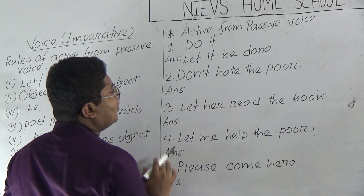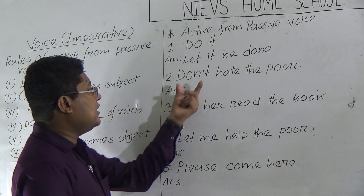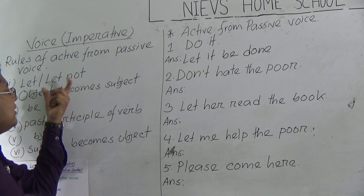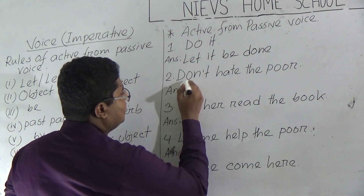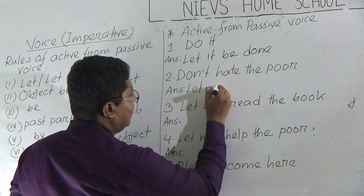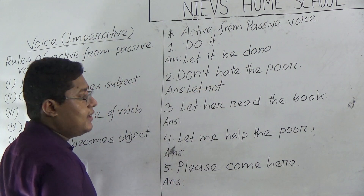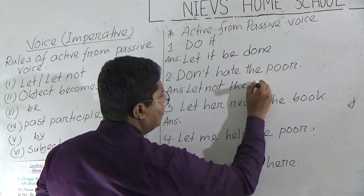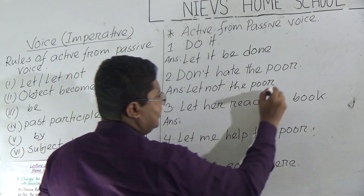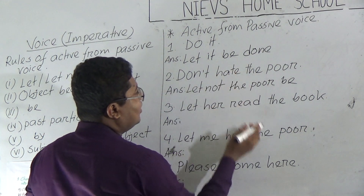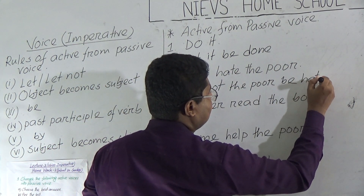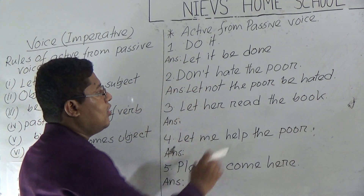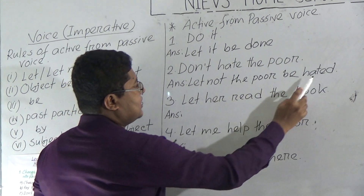Example two: 'Don't hate the poor.' If the imperative sentence starts with 'don't,' we add 'let not.' In place of 'don't,' we write 'let not.' Then object becomes subject: 'the poor.' We add 'be' and the past participle of the main verb: 'hated.' Result: 'Let not the poor be hated.' If the sentence starts with 'don't,' we add 'let not,' object becomes subject, then 'be' and past participle of the main verb.